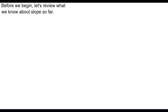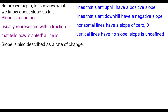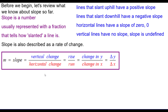Before we begin, let's review what we know about slope so far. Slope is a number, usually represented with a fraction, that tells how slanted a line is. Slope is also described as a rate of change. Lines that slant uphill have a positive slope. Downhill lines have a negative slope. Horizontal lines have a slope of zero, and vertical lines have no slope — the slope is undefined. This is our extended slope definition.